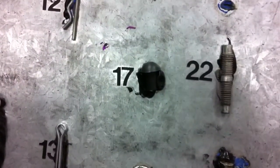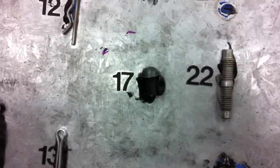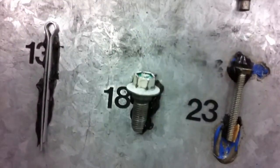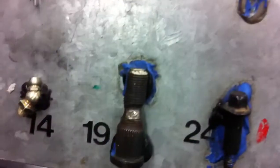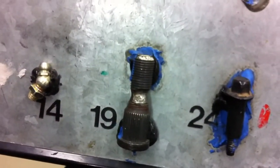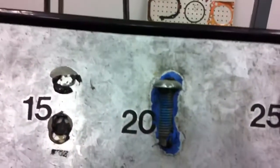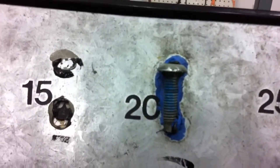Number seventeen is a rivet. Number eighteen is a hex flange bolt. Number nineteen is a wheel stud. Number twenty is a torx head.